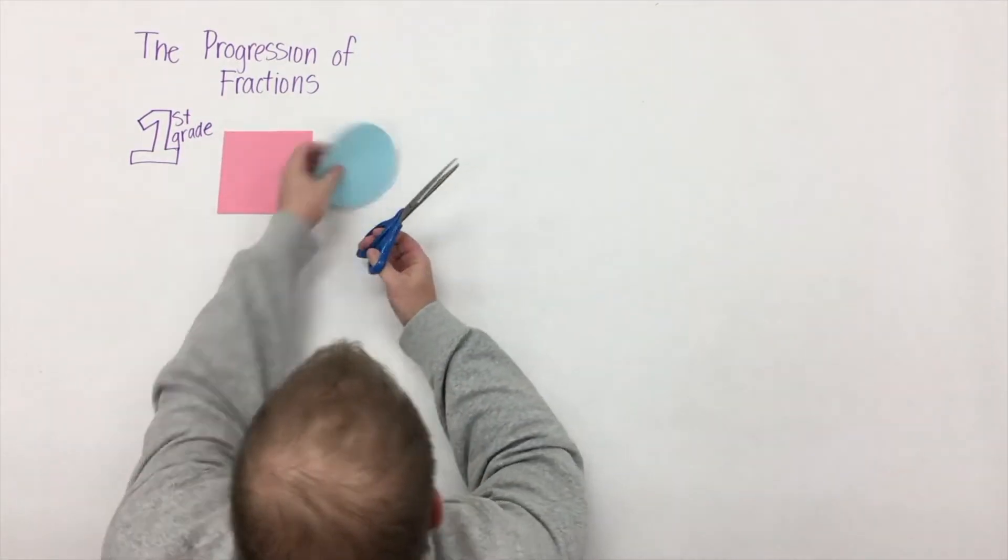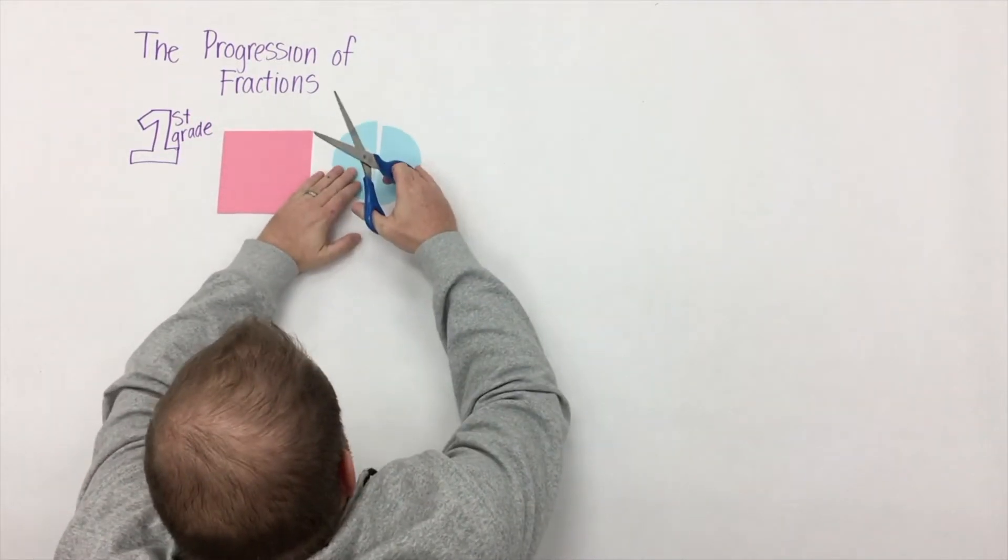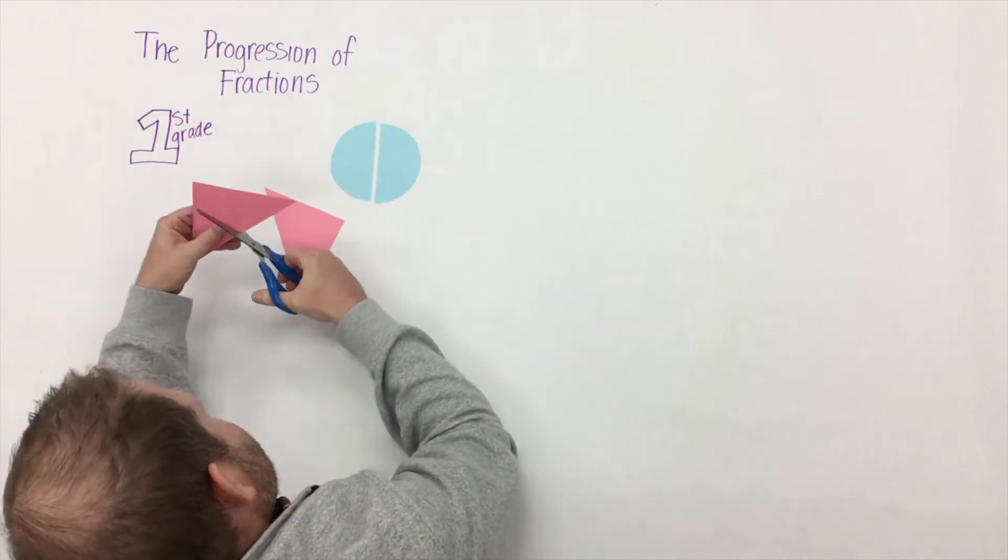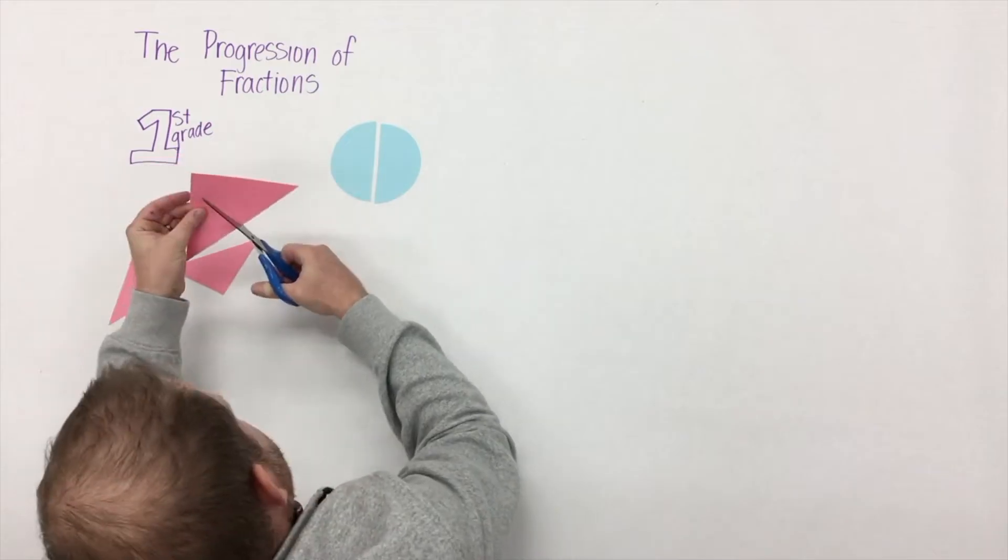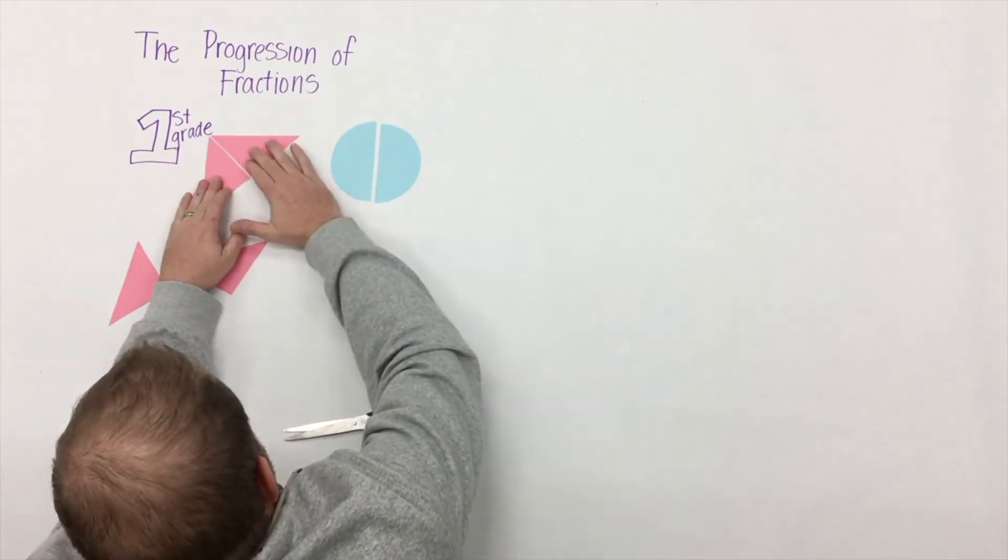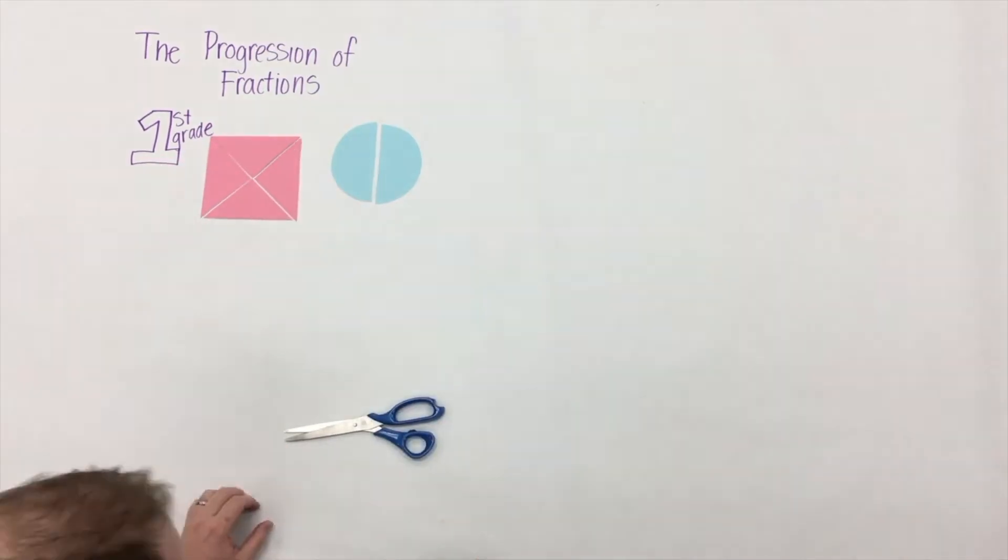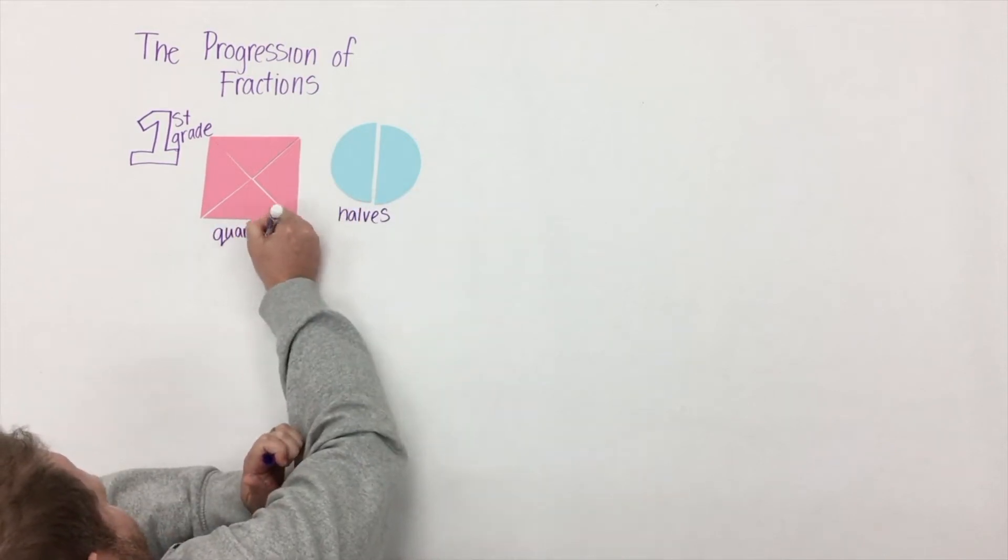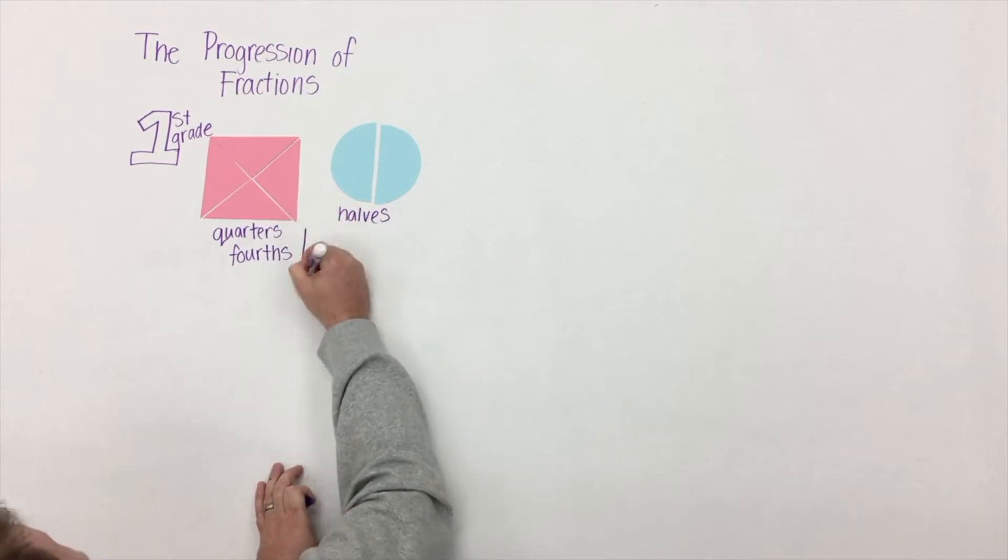It starts with a word: partition, and I think students should be able to use that word as well. In first grade, students should be able to partition squares and rectangles into halves and quarters, which can also be represented or called fourths. The vocabulary development here is the biggest piece in first grade, so they could also say a quarter of, a fourth of, or a half of.